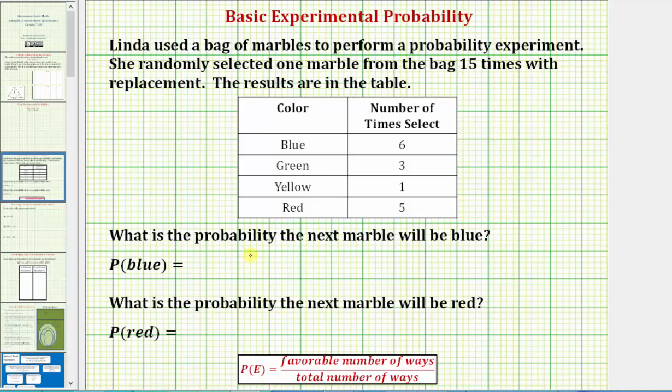We're asked to find the probability the next marble will be blue, and also the probability the next marble will be red. In general, the probability of an event compares the favorable number of ways to the total number of ways.